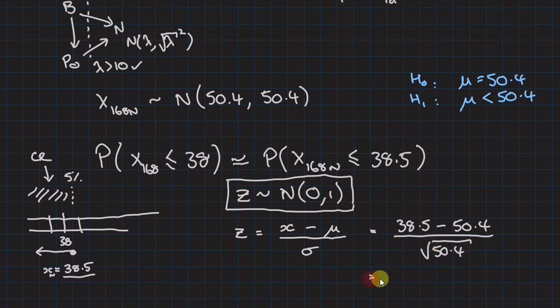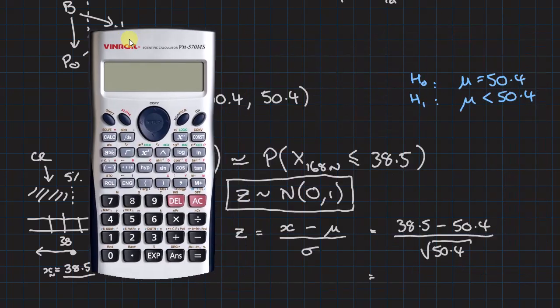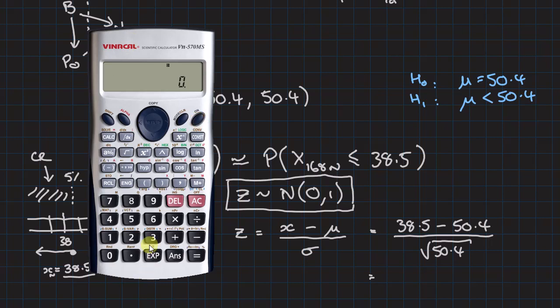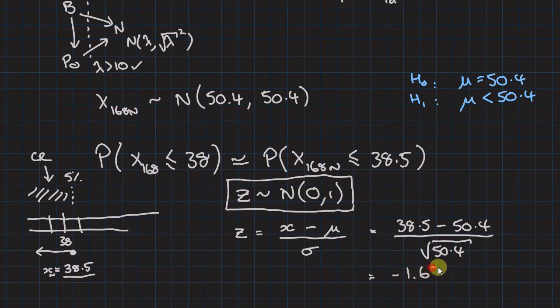And that says that my test z is 38.5 minus 50.4 and then divide by the square root of 50.4. One error people make with the calculator is sometimes they do this straight so they put the division on the end, and if you do that this 38.5 doesn't get divided by the square root part. This gives me a number to test of minus 1.676.